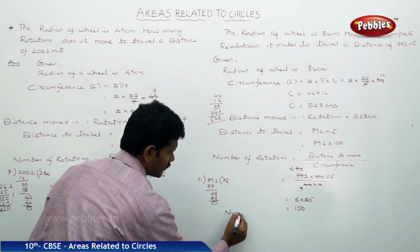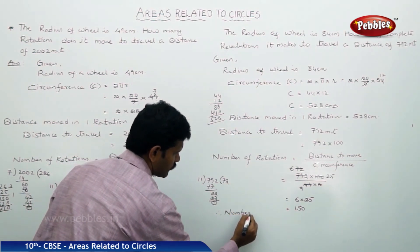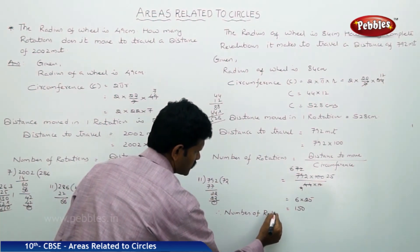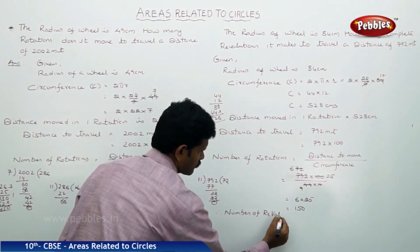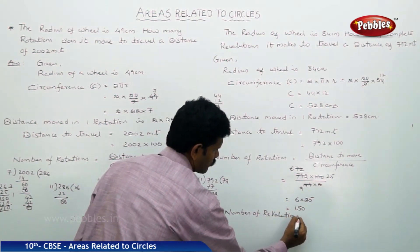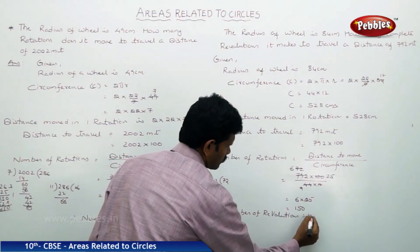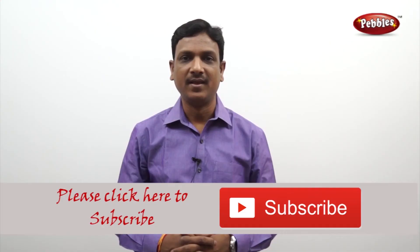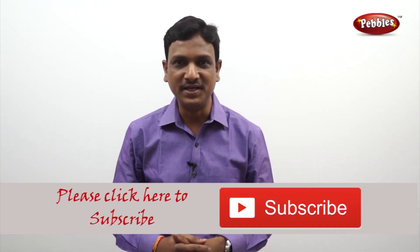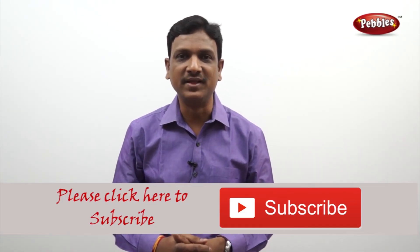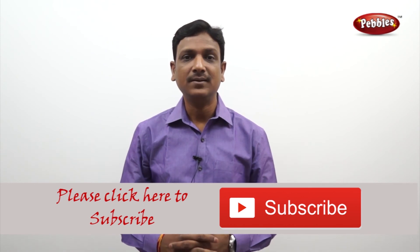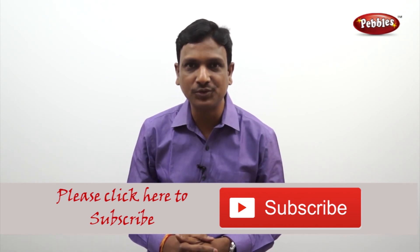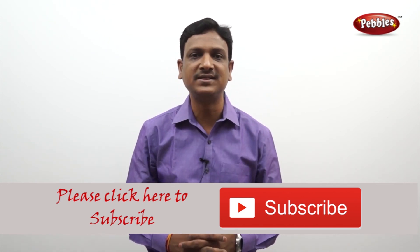Therefore, the number of revolutions is equal to 150. If you like this video, please give a thumbs up and subscribe to our channel to get more videos on the CBSE syllabus.